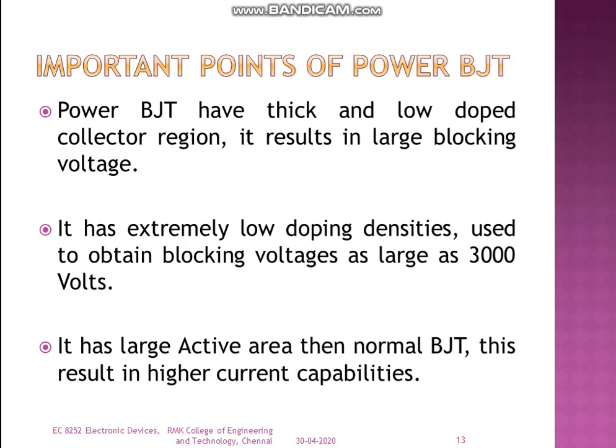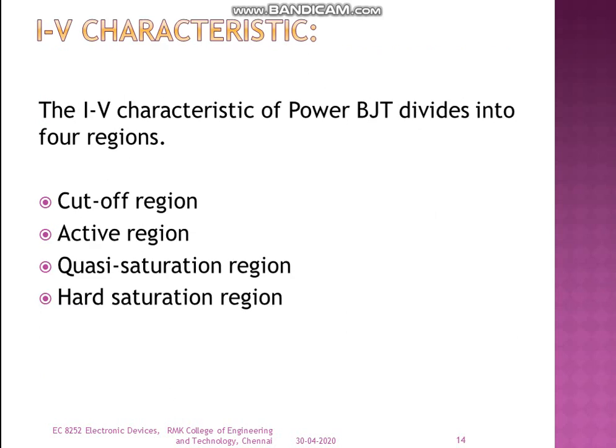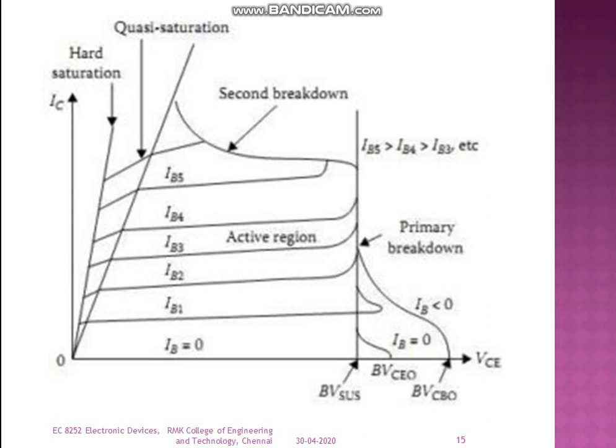Important points to remember: power BJTs have a thick and low-doped collector region, which results in a large blocking voltage. Extremely low doping densities are used to obtain blocking voltages as large as 3000 volts. Power BJTs have larger active areas than normal BJTs, resulting in higher current capabilities. The IV characteristics of power BJT show four regions: cutoff, active, quasi-saturation, and hard saturation. The characteristic curve also shows two breakdowns: primary breakdown and secondary breakdown.